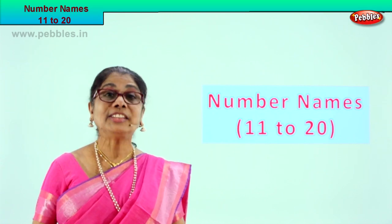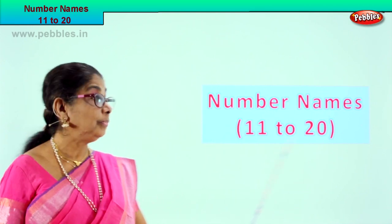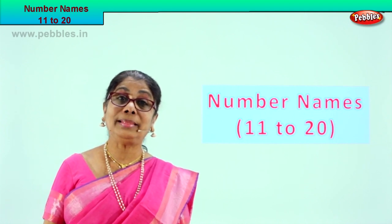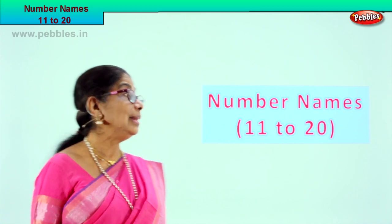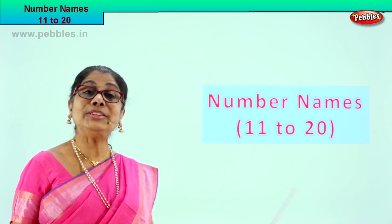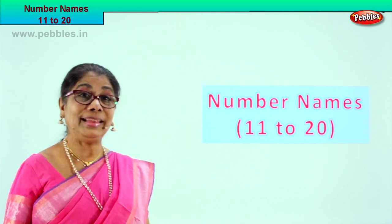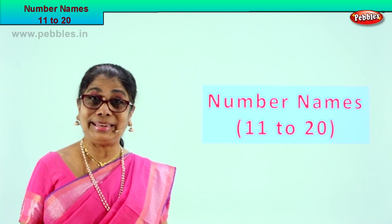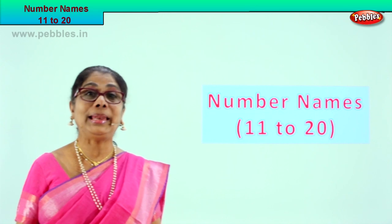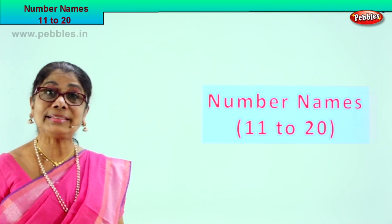Hi children! Today let us learn number names 11 to 20. You know how to write the name and spell the numbers 1 to 10. Let us learn each number's name and spell it — 11 to 20. I hope you'll enjoy learning number names 11 to 20. Look carefully at the numbers and the spelling, names of the numbers. Let's look at our first exercise.